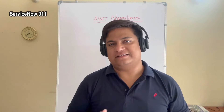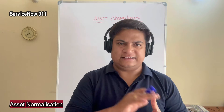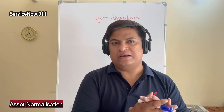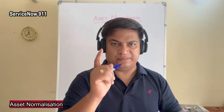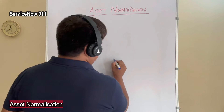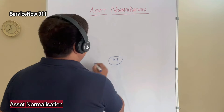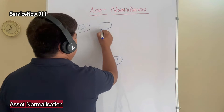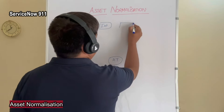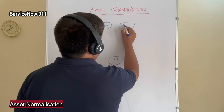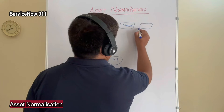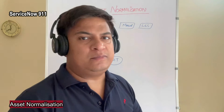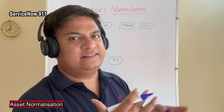Hello friends, today we discuss asset normalization. So what is asset normalization? In ServiceNow, the asset table receives data coming from different sources — data is coming from discovery, from integration, manually, or from any legacy system. There may be more number of data sources from where the data is coming.